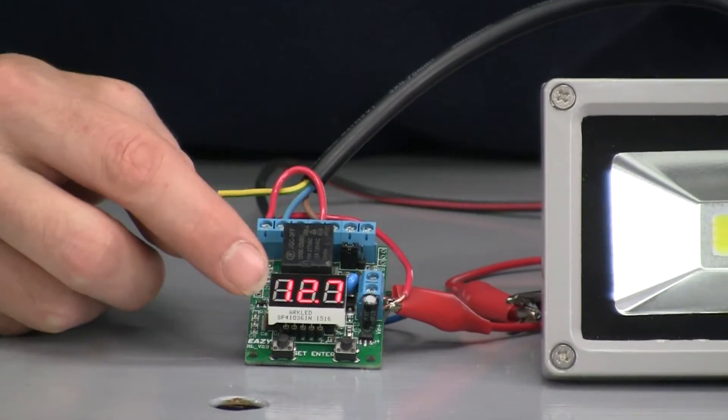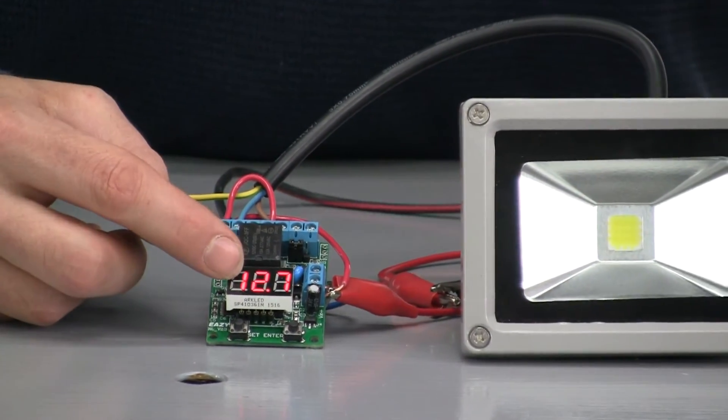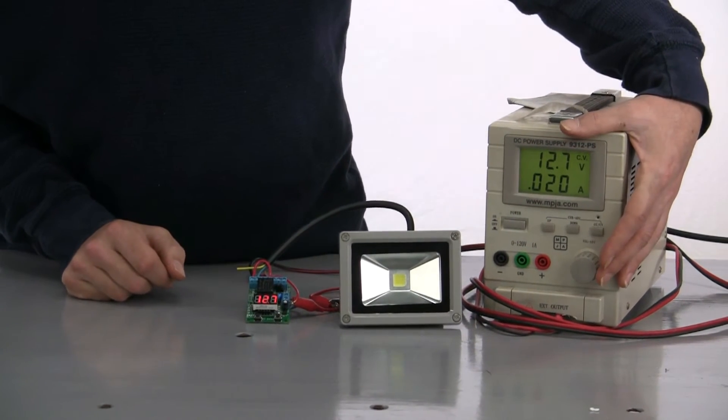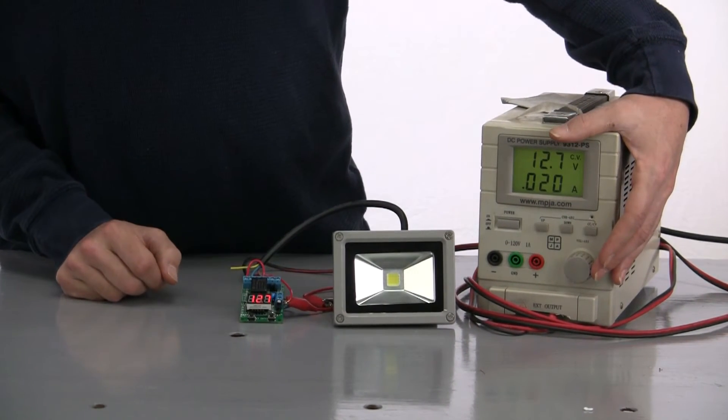Right here it shows you your voltage, your battery voltage on the input. We're at 12.7. So let's simulate when your battery gets full.